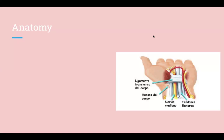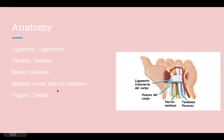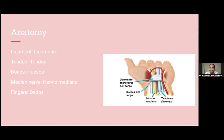The flexor retinaculum is an enclosed cavity composed of a very thick ligament that encloses all of these elements, including the median nerve, which is the one that suffers the most within this very closed compartment. It sits on top of the carpal bones — hueso in Spanish. So we have tendon, ligament, bones, the median nerve — nervio — and the target of action is the fingers. We'll discuss that because it's relevant to the clinical expression of carpal tunnel symptoms.